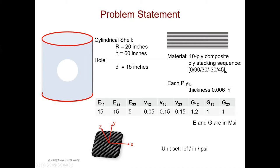Each ply has a thickness of 6e-3 inches. The material property is assigned here, with Young's modulus 15-15-5 for 1-2-3 directions. Everything for Young's modulus and shear modulus is in mega-psi. For the woven composite ply, X and Y is the in-plane direction and Z is the out-of-plane direction. The unit set we are going to use in Abaqus is pounds, inches, and psi.